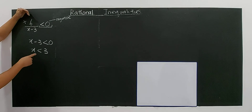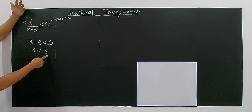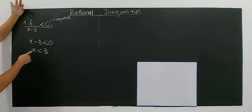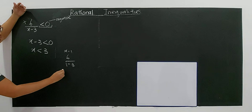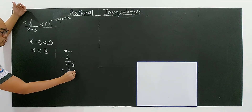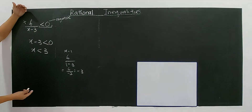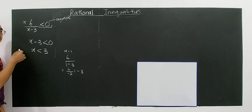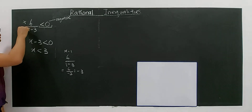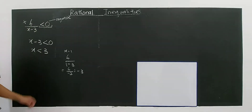Now we go for the simple verification. You choose any value less than 3 — for example, you choose 1. So you have 6 divided by 1 minus 3, which gives 6 divided by negative 2, which is negative 3. Negative 3 is less than 0 — correct. You choose any value less than 3: 2, 0, negative 1 — you put it in, and you will always get a number less than 0. This is the solution.